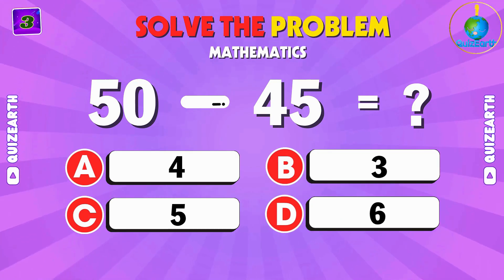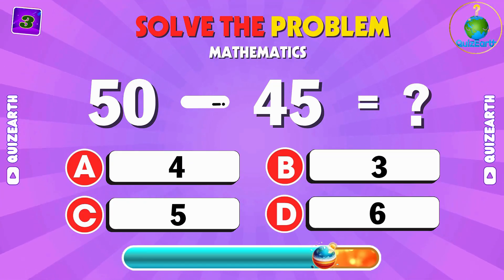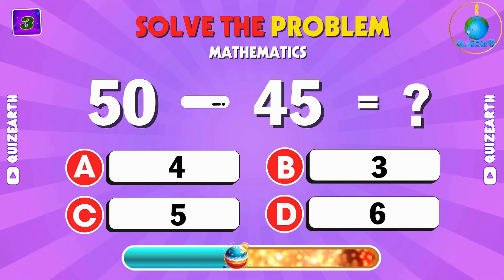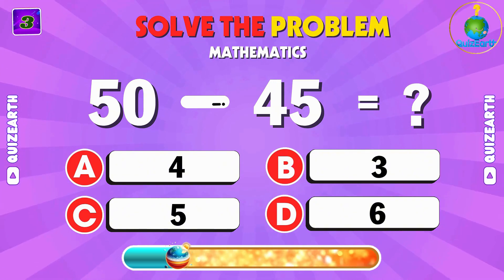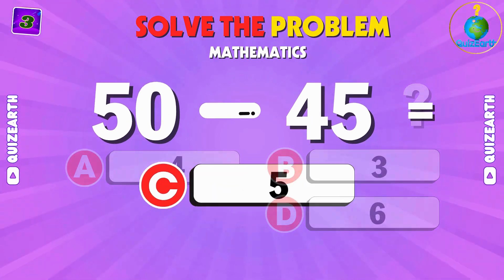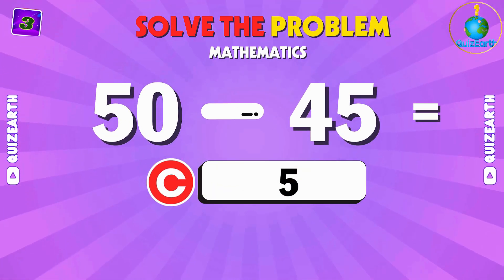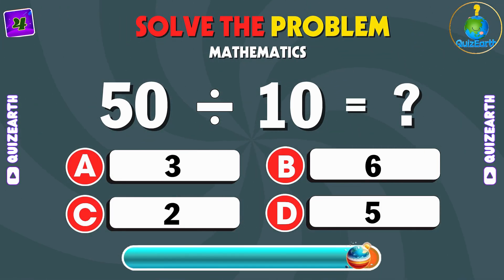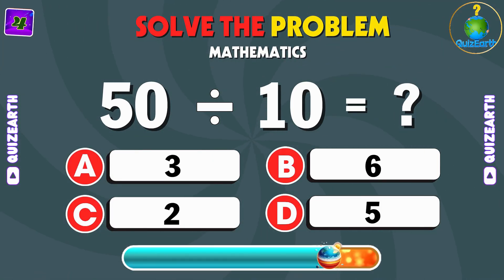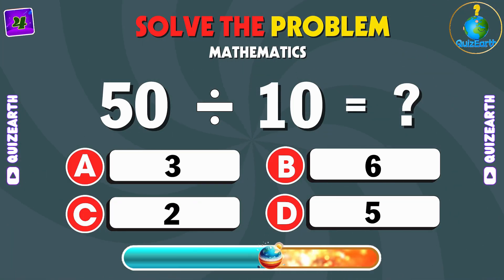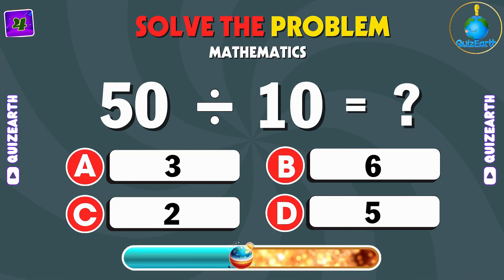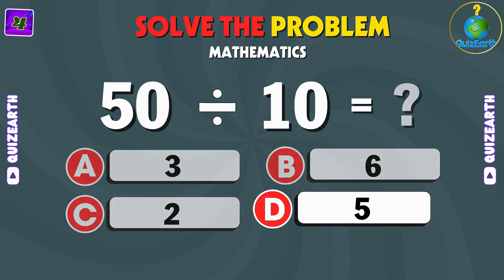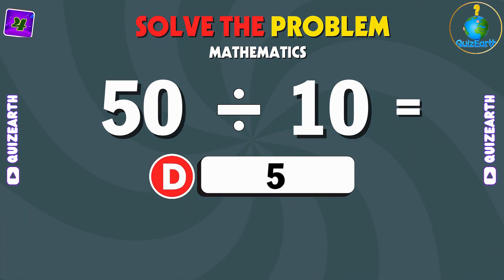Subtract 40 from 50 — quick math. C: 5. Let's split 50 into 10 equal parts. What's the answer? D: 5.